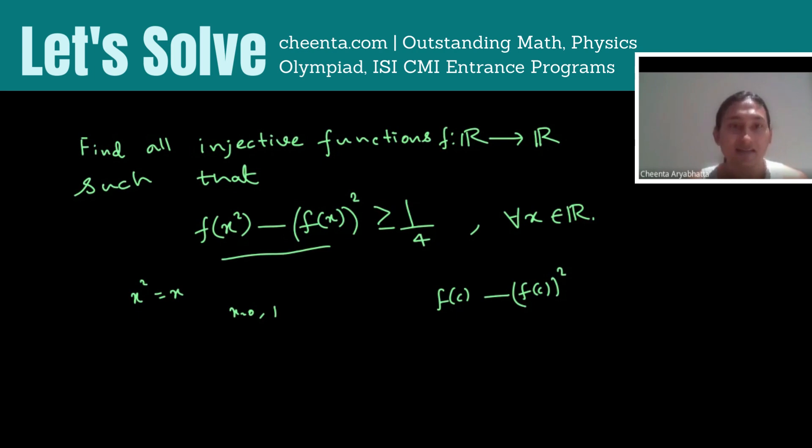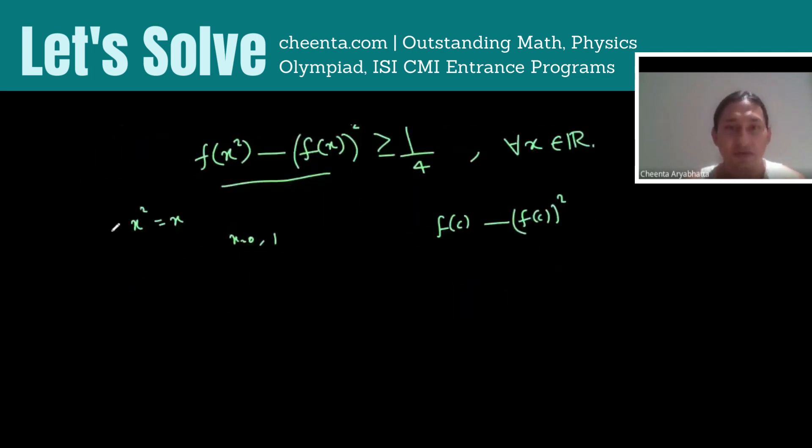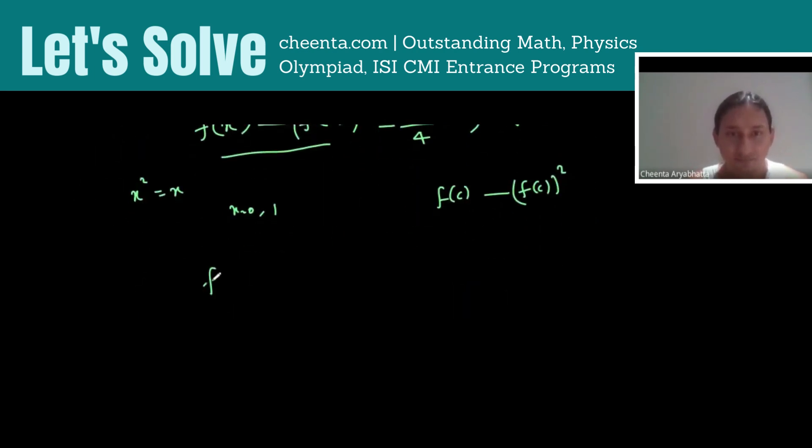So let's try zero first. What do we get? f(0) - (f(0))² is greater than or equal to 1/4. So we can take everything to the other side and write 0 ≥ (f(0))² - f(0) + 1/4.